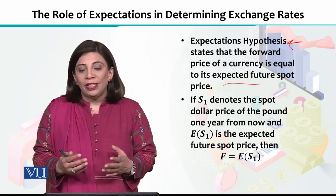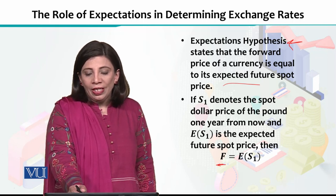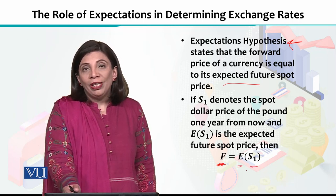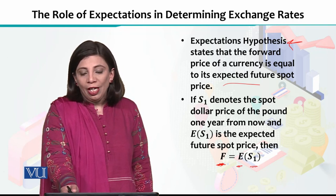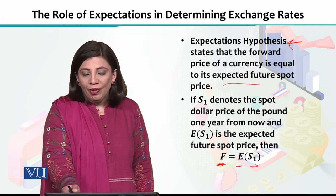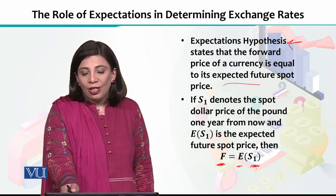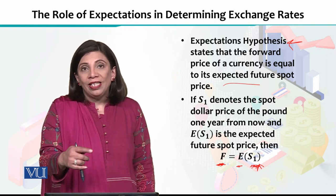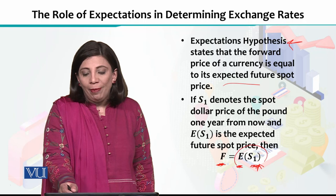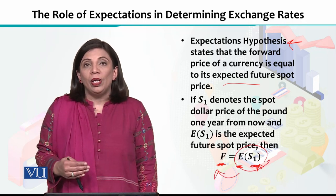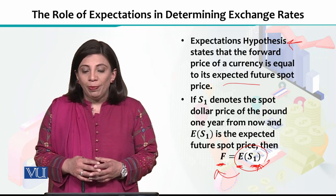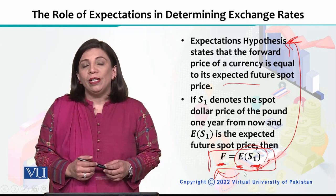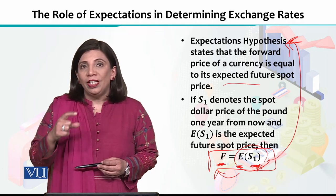If we express this symbolically, we can represent this as F — capital F — where this forward price, and S1 is our current spot price. E represents the expectations, meaning our forward price will help us in determining what will be the forward price of that particular asset. This particular equation is based upon the expectations hypothesis, which says that your forward price is always what the expected spot price will be — which is derived from the future.